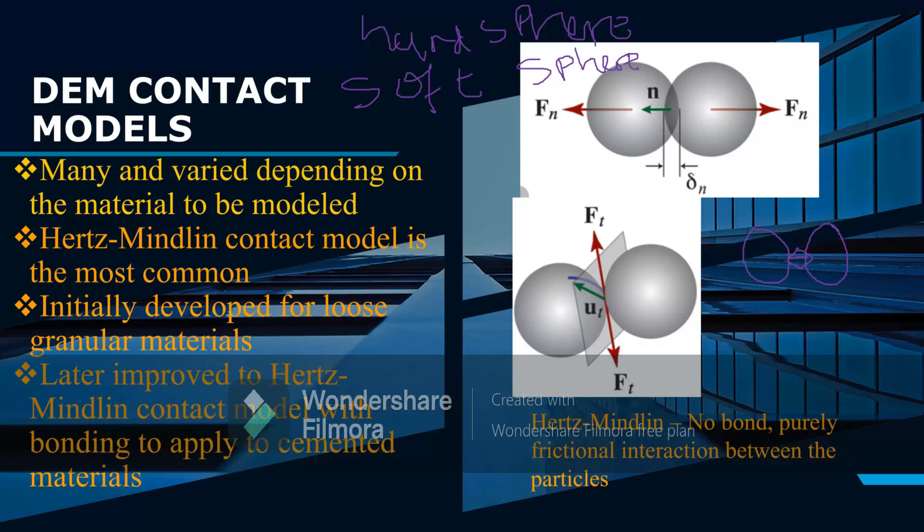For the Hertz-Mindlin model, the original contact model is a purely frictional interaction. Once the particles collide, we compute the forces. If there are some distortions within the particles, this is a purely frictional computation. The forces and mechanics use purely friction to calculate.